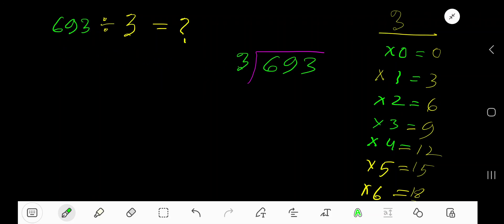693 divided by 3. Here 3 is the divisor, so we need the multiplication table of 3: 3×0=0, 3×1=3, 3×2=6, 3×3=9, 3×4=12, 3×5=15.